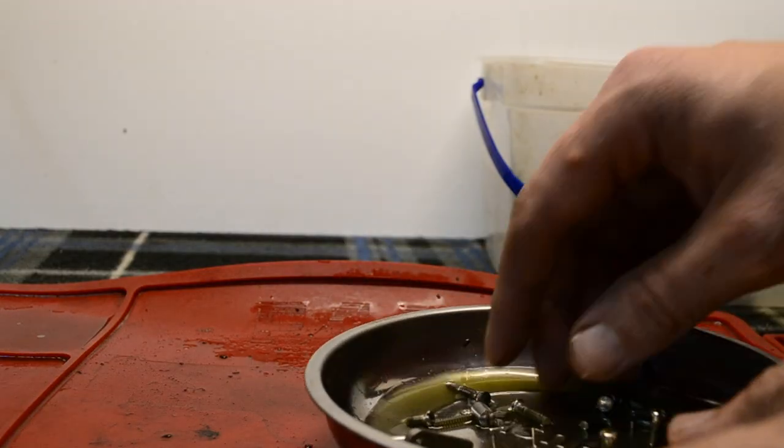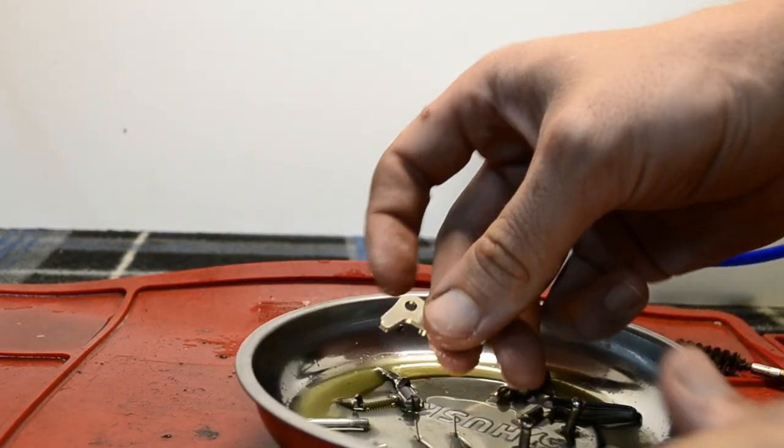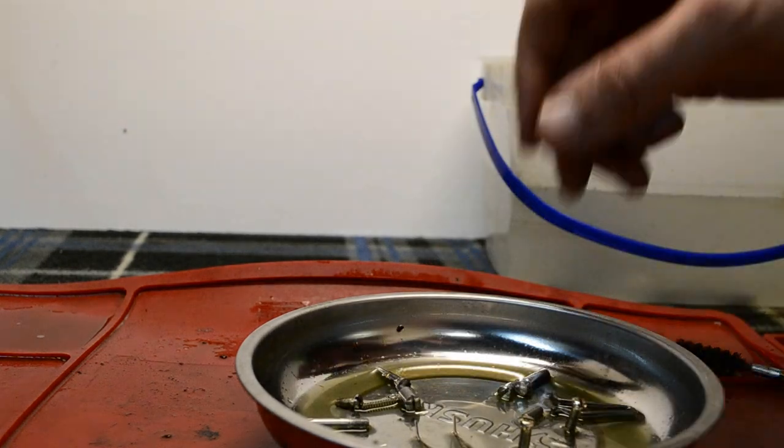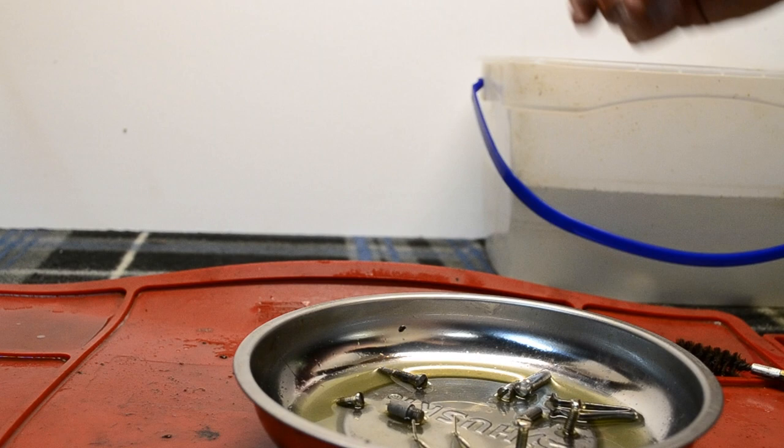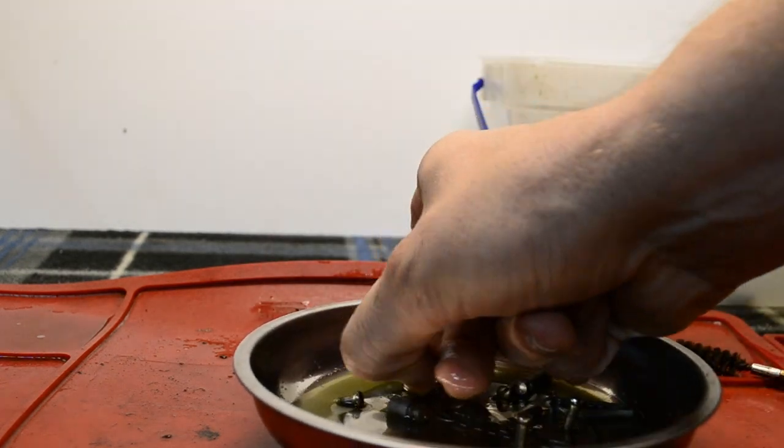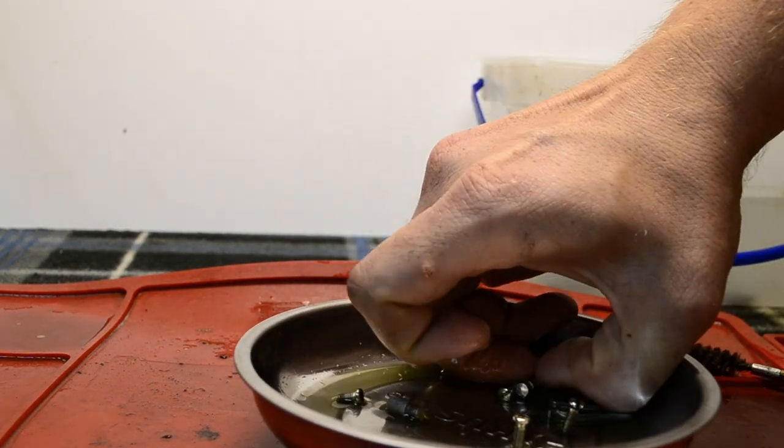Once all of the major pieces are in the bucket of water, take your container of small parts and visually inspect to see which ones need to be scrubbed free of grime. After you have scrubbed them, place all of the small parts into the soapy water.